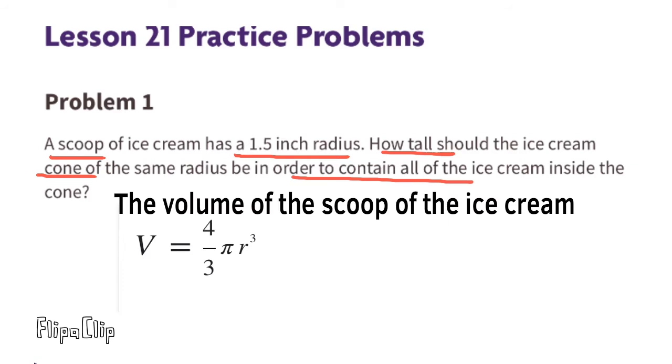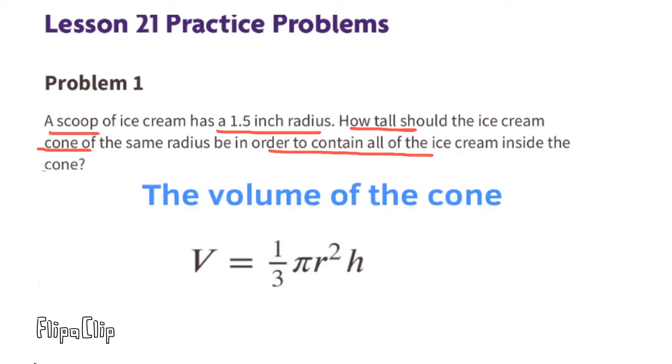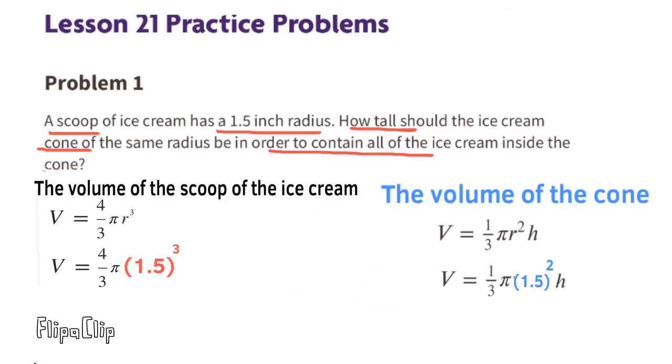Substitute the R with 1.5. This equation represents the volume of the scoop of ice cream. And using the formula for finding the volume of the cone, we substitute the R with 1.5. And we use these two equations for the system of equations. The volume of the scoop of ice cream will be equal to the volume of the cone.